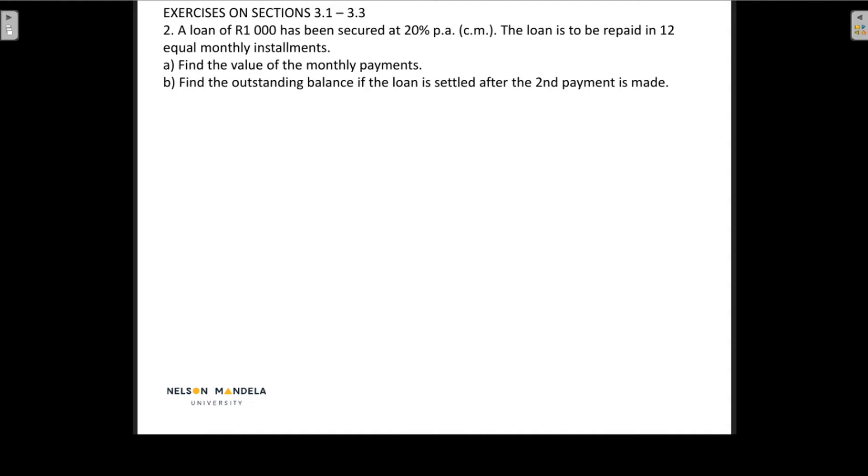Now this is a nice exercise because it makes use of the knowledge that you've gained in chapter 2 as well as the new knowledge from chapter 3. So the A part is actually revision from chapter 2. Now the information we have is we have the loan size so that we have the present value of the loan which is a thousand rands. The interest rate is 20% per annum compounded monthly and we have 12 equal monthly instalments.